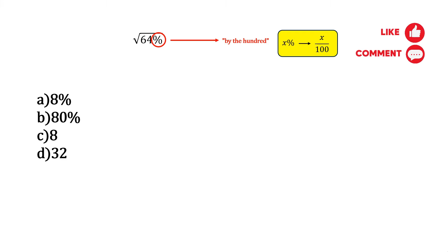Okay, so in this case, 64% could be expressed as 64 over 100. Now when looking at the square root of a fraction, we can actually rewrite this as the square root of the numerator over the square root of the denominator. So square root of 64 over 100 could be rewritten as square root of 64 over square root of 100.